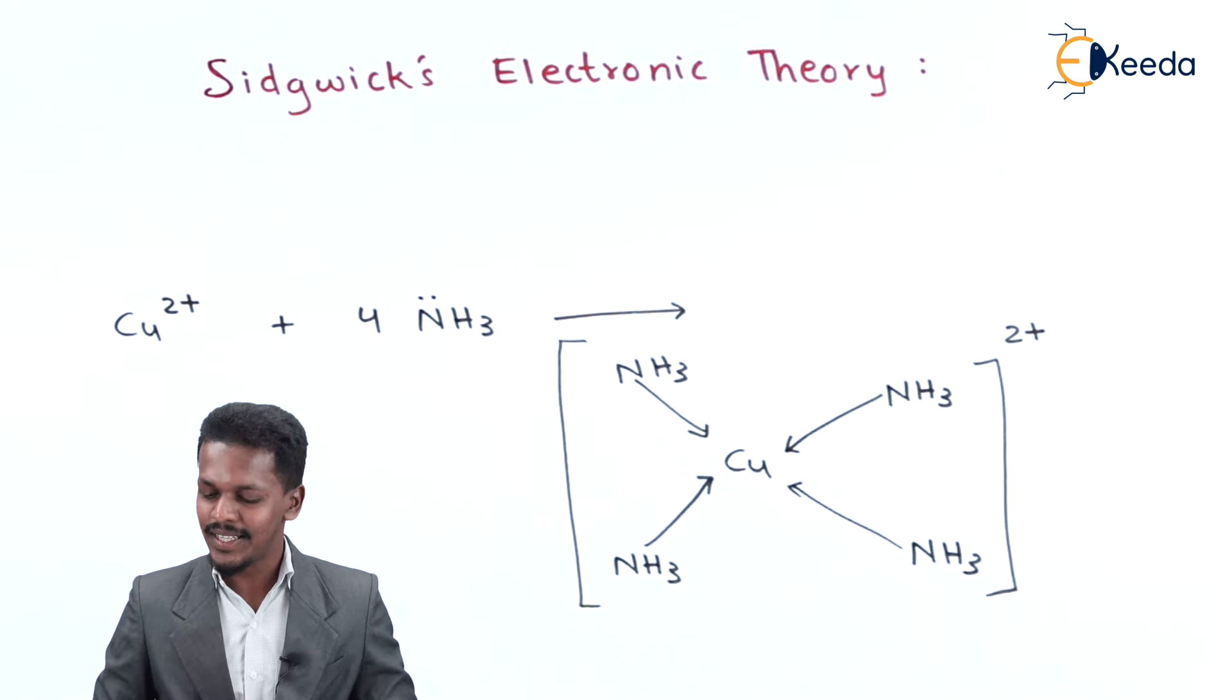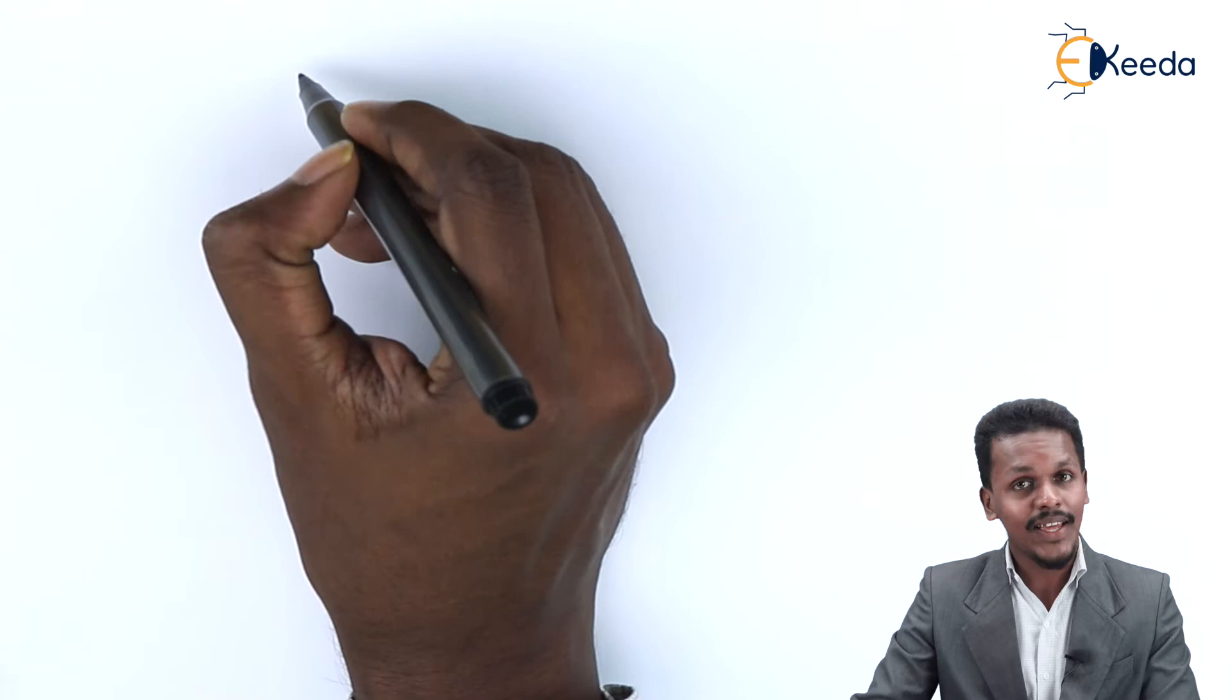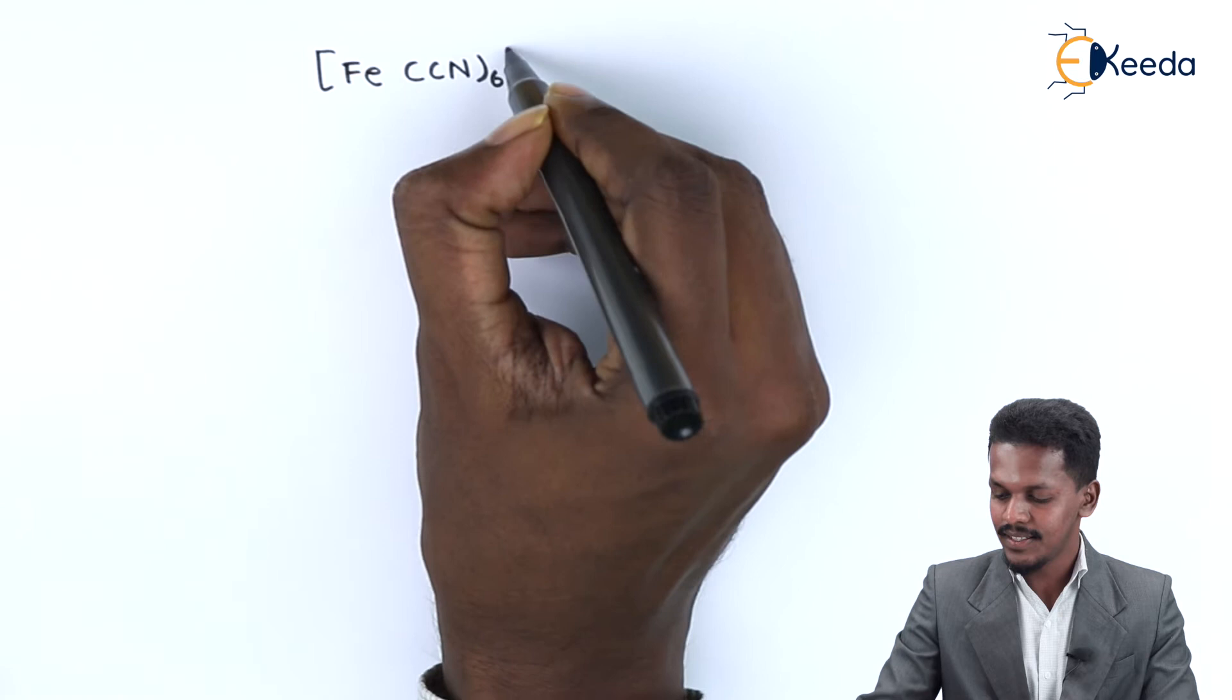Consider another example, ferrocyanate, [Fe(CN)₆]⁴⁻. How can we represent this according to Sidgwick's Electronic Theory? Here we find Fe in the form of Fe²⁺ ion present in the center.